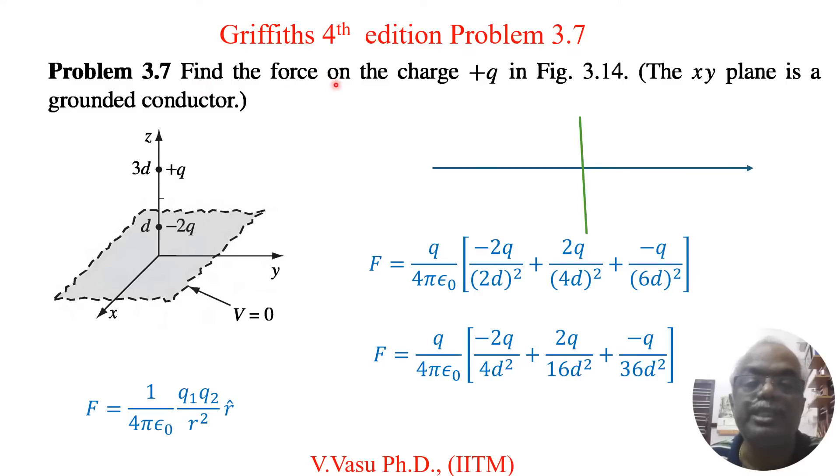Today we will solve problem 3.7 of Griffith 4th edition, Introduction to Electrodynamics. Problem 3.7 is finding the force on the charge Q in figure 3.14. This is figure 3.14. The xy plane is a grounded conductor. This conductor is grounded, so the potential is 0 for this. Now we have to solve this problem.